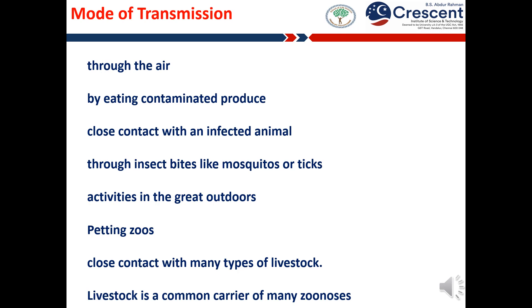Zoonotic agents can be transmitted from animals to humans by various ways, including through the air, by eating contaminated meat or produce, through close contact with an infected animal, by touching an area or surface that an infected animal touched, and through insect bites like mosquitoes or ticks. Many transmissions occur when people hike, bike, boat or enjoy other activities outdoors. Petting zoos are also common places for zoonotic disease transmission. Those who live and work on farms are in close contact with many types of livestock, which are common carriers of many zoonotic diseases.